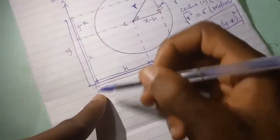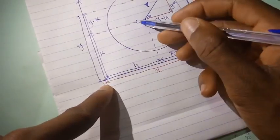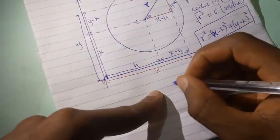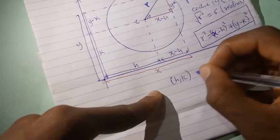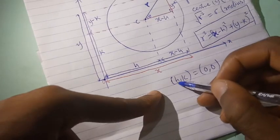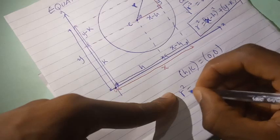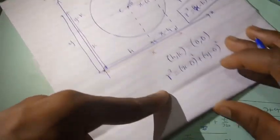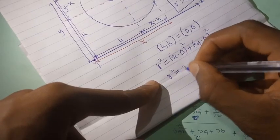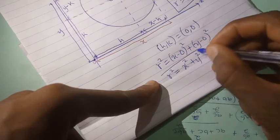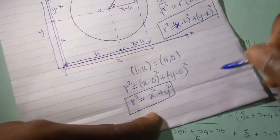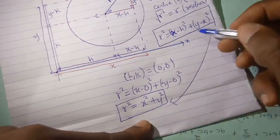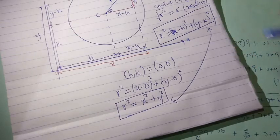Suppose this circle is drawn at the origin — the coordinate of the center is going to be zero, so h comma k will be zero comma zero. Therefore substituting h equals 0 and k equals 0, we get r squared equals x minus zero squared plus y minus zero squared, which simplifies to r squared equals x squared plus y squared. This is the equation of a circle at the origin. Throughout, we'll be using these two equations: this one from the origin and this one from a particular coordinate h comma k. Thank you for watching.